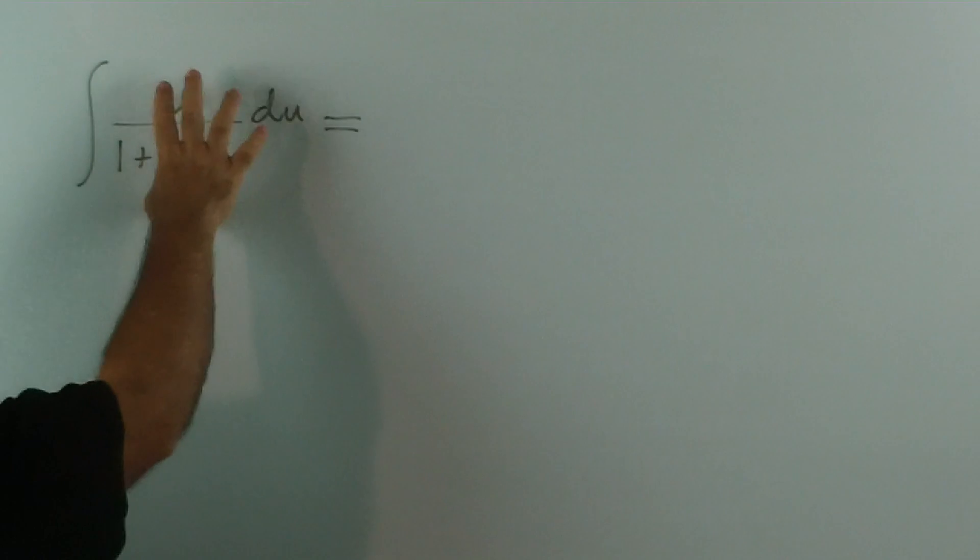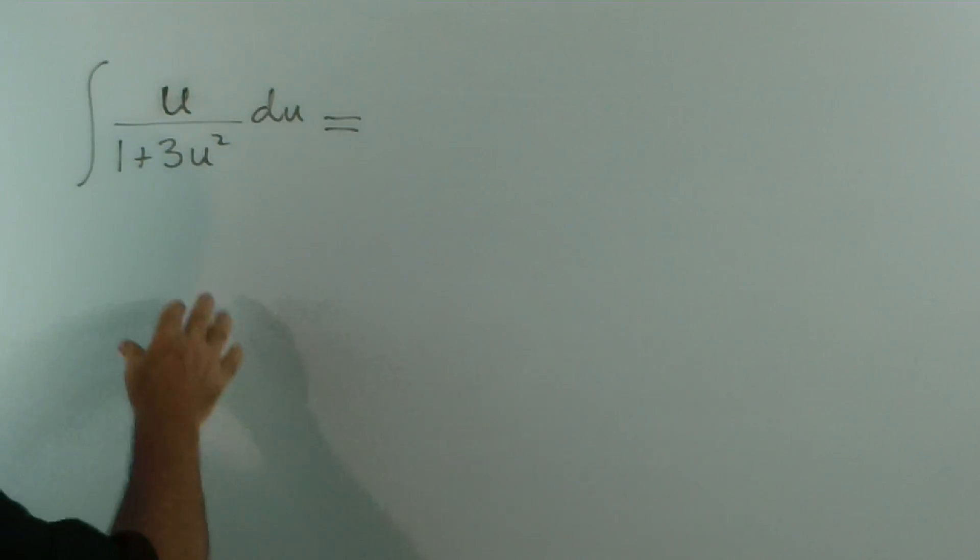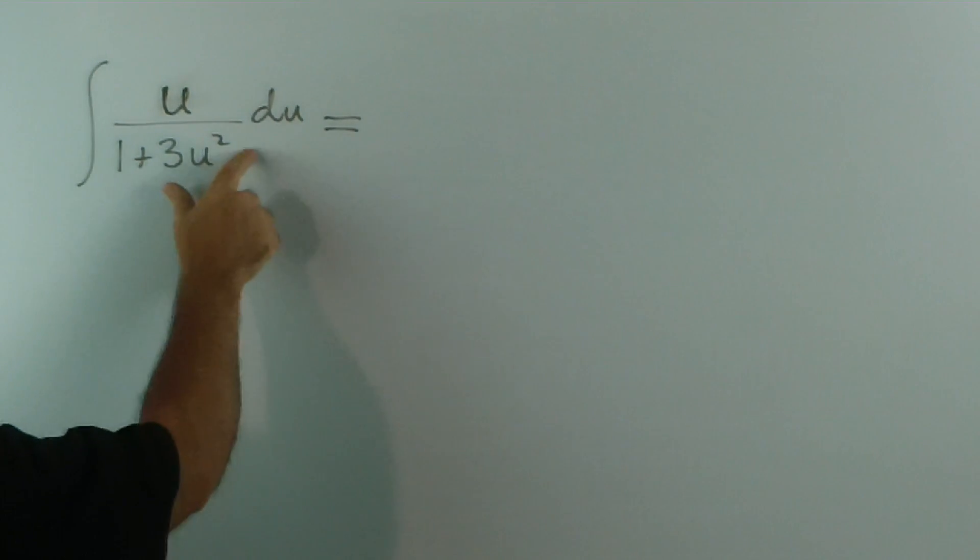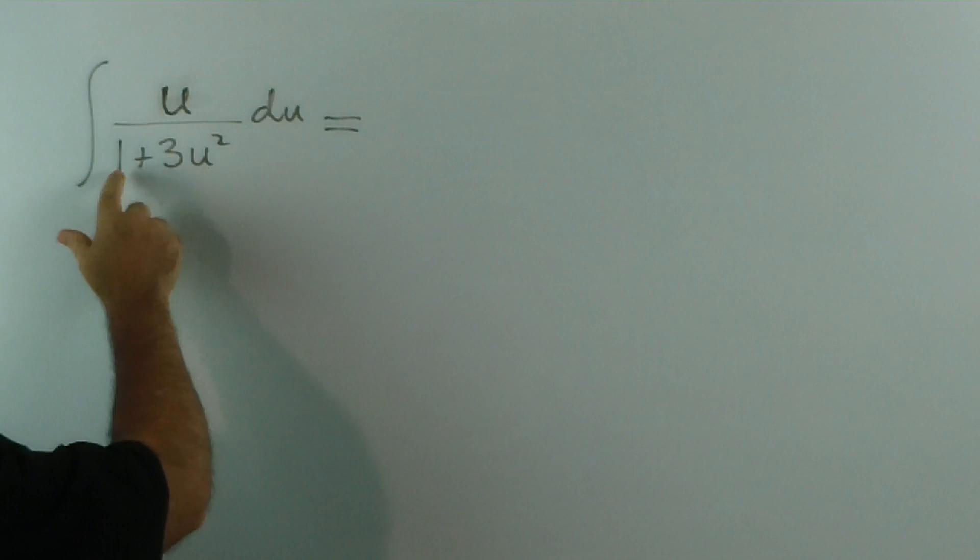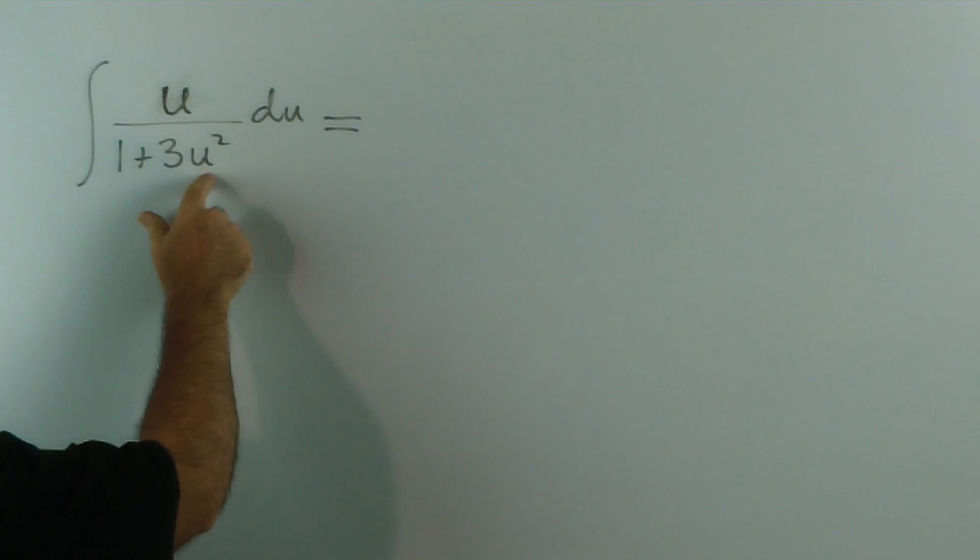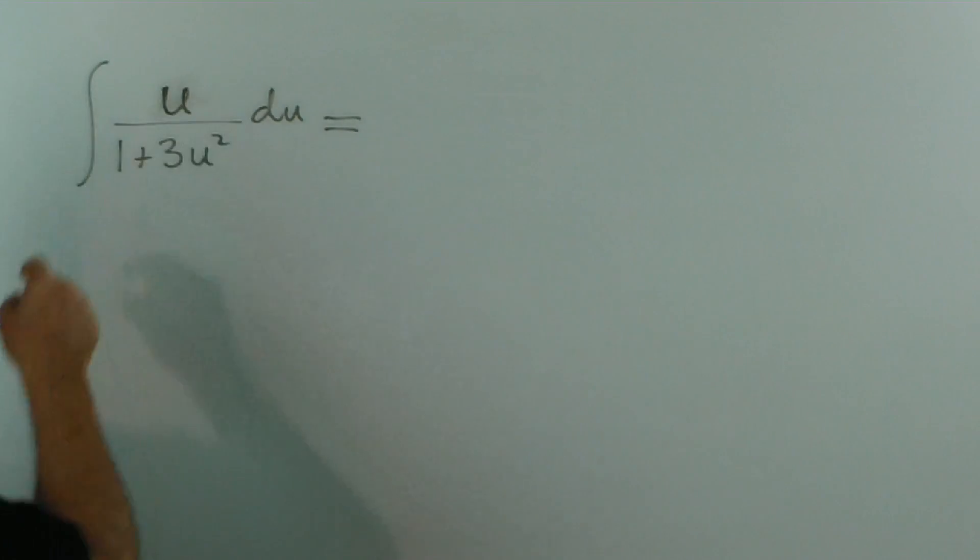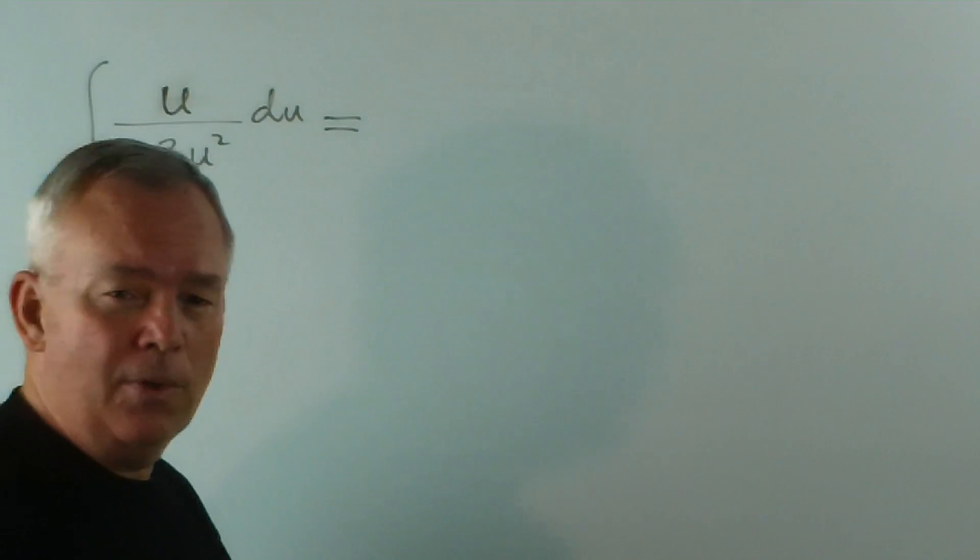We test, because it's a fraction, we test the logarithmic pattern first and we look for the derivative of this. Now, the derivative of this expression is 6u. And we think we'd have a u on the top. If there was a 6 there, we would exactly have the derivative.